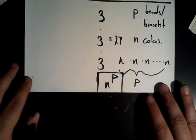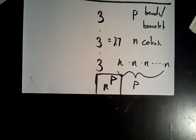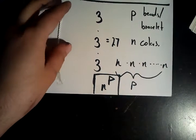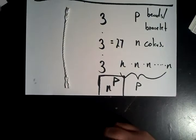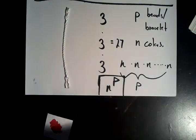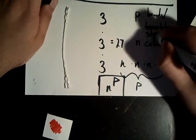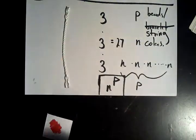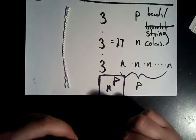So first we're going to introduce the problem. Let's say we're trying to make a string, and a string consists of p beads per string. So this should say p beads per string. And there are n different colors to choose from.